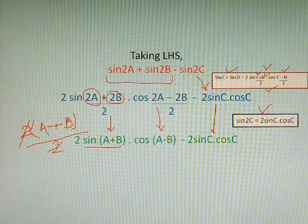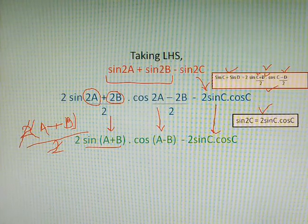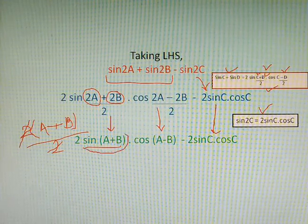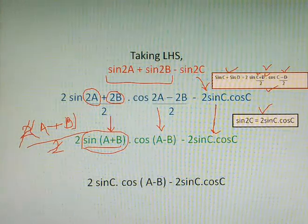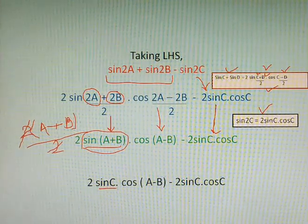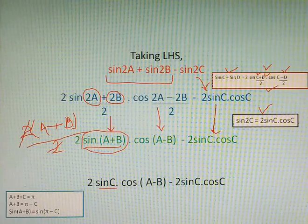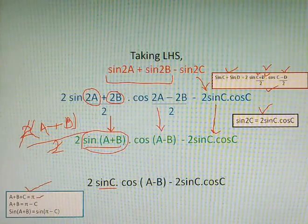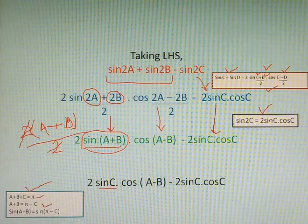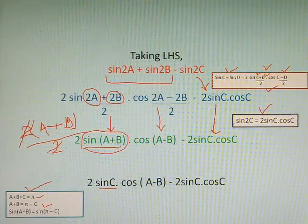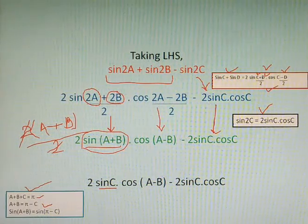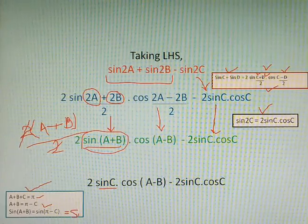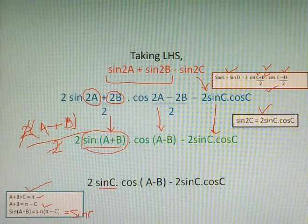And again 2sinC·cosC is repeated. Let's move to the next step. In the next step we will convert this sin(A+B) in the form of angle C, and that can be done from the condition that we have been provided. A + B + C equals π, so A + B can be written as π - C, taking C on the right side. And then if we keep sine on both sides, that can be written as sinC.